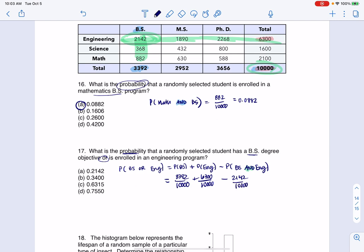And when I crunch that number on my calculator, I get 7,550 out of 10,000, which comes to the decimal 0.7550, and the answer is D. All right, thanks so much everyone. Bye.